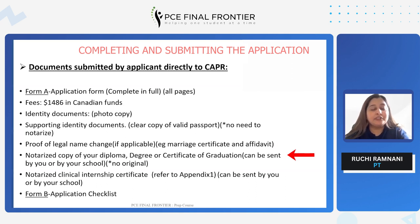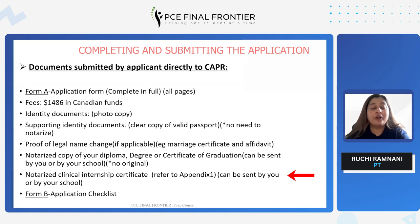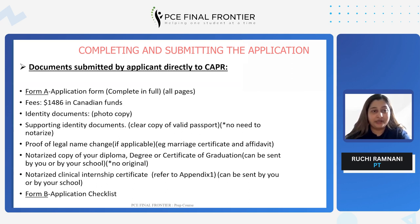A notarized copy of your diploma, degree, or certificate of graduation can be sent directly by you or by your school. Make sure it's a copy and not the original, and include a notarized clinical internship certificate. Different countries have their different criteria — refer to Appendix 1 for how your country needs to be worked through. This document can be sent by you or by your school. Make sure all documents are in copy form, not original. If any original documents are sent, the entire package will be returned without any action taken on it.